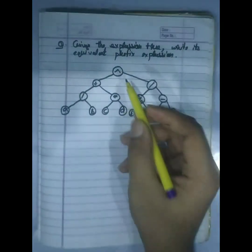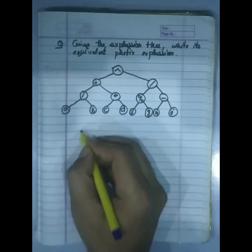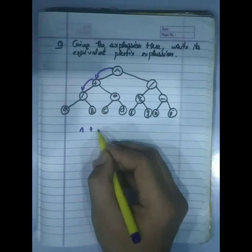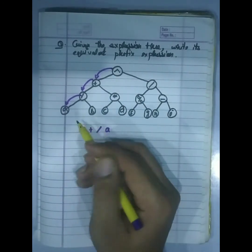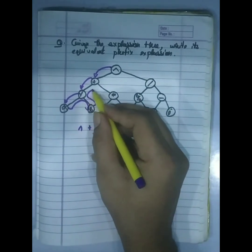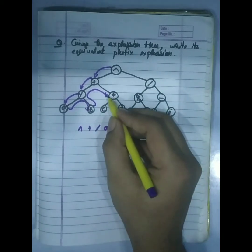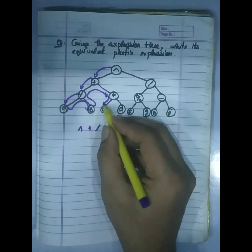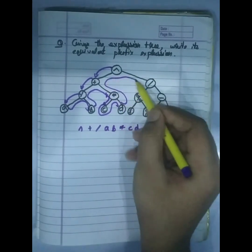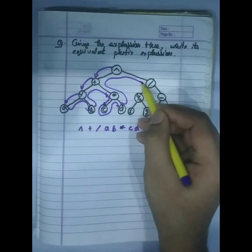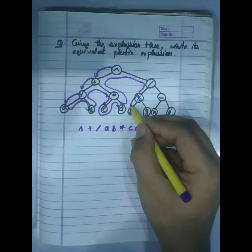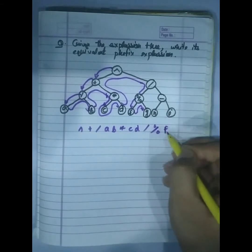Starting pre-order traversal: first 'power', then 'plus', then 'divide', then 'a', then 'b', then 'multiply' (into), then 'd', then 'divide', then 'mod', then 'f', 'g'. This gives us the prefix expression by reading the tree nodes in pre-order (root, left, right) sequence.